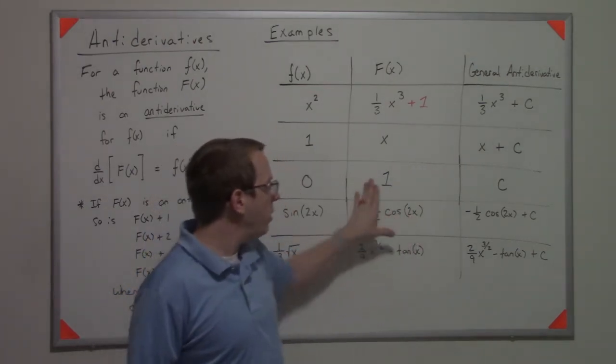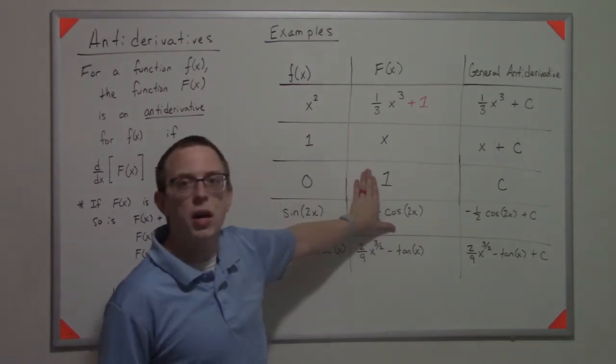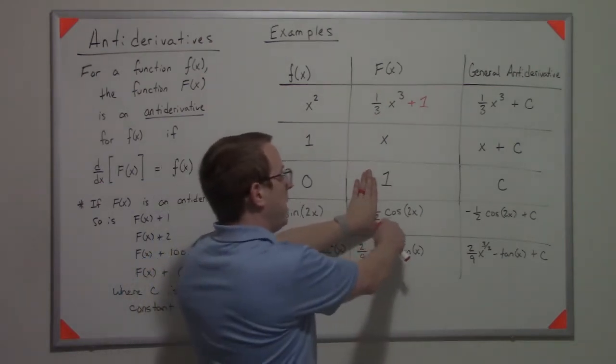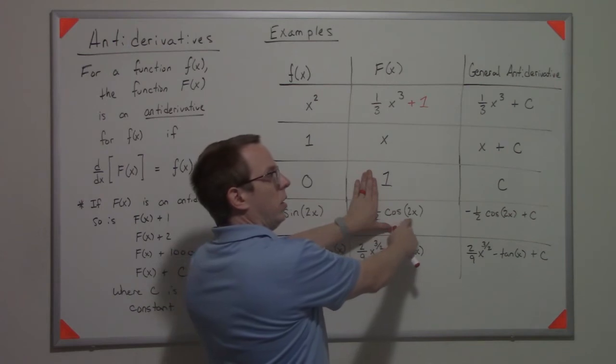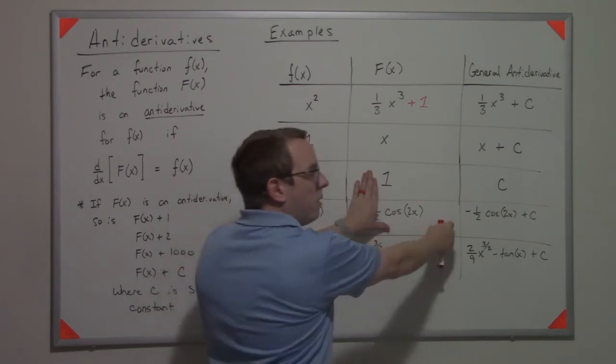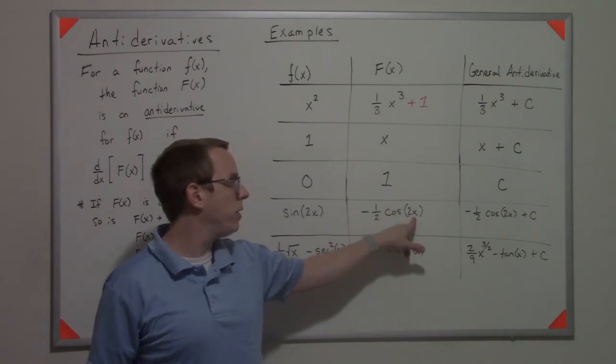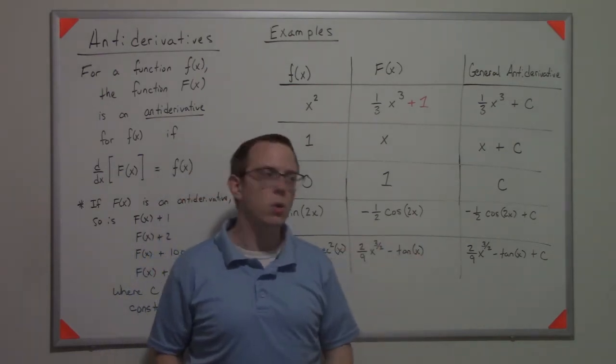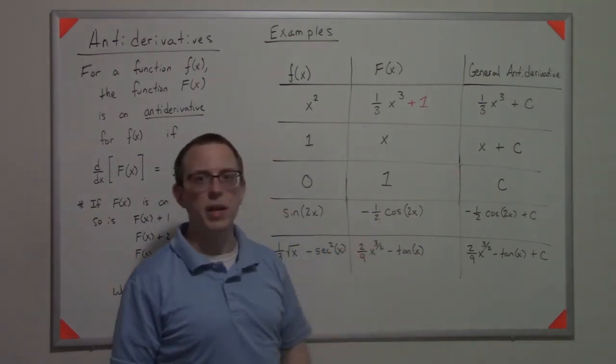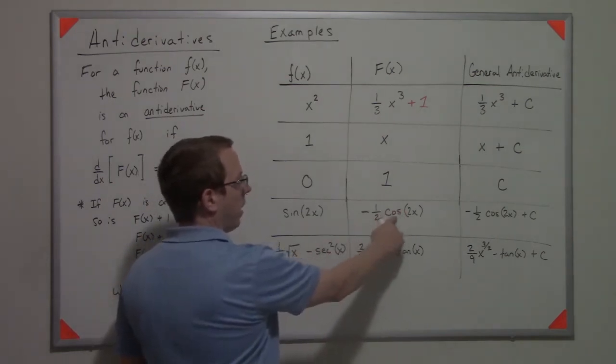I also know that by the chain rule, if I derived cos(2x), I would get -sin(2x) times 2, right? By the chain rule we would have to take the derivative here. So as a result, we have to divide out by that 2.